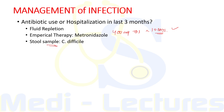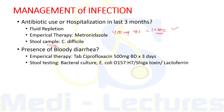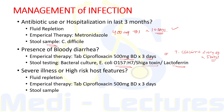If there is presence of bloody diarrhea — that is dysentery — we do fluid repletion and start empirical therapy with ciprofloxacin 500 mg BD for three days, or alternatively cefixime 200 mg BD for five days, providing gram-negative coverage. We can send stool testing for bacterial culture, E. coli O157:H7 strain, Shiga toxin, and stool lactoferrin. If there is severe illness or high-risk host features such as age over 70 or an immunodeficient state, we again do fluid repletion and start empirical ciprofloxacin, and may send stool samples.